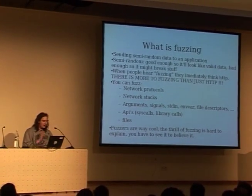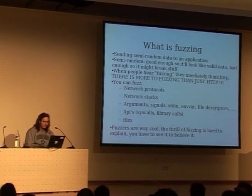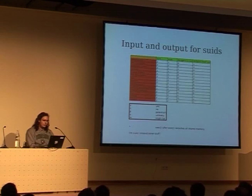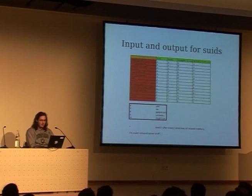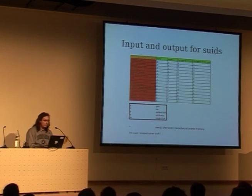Fuzzers are amazingly cool. It's kind of hard to describe — you really have to try some and see how cool it is to break stuff with very little effort. Some of the things you can use to fuzz a SUID binary include signals, file descriptors, current directory, shared memory, TTY, timers, and all sorts of other stuff.